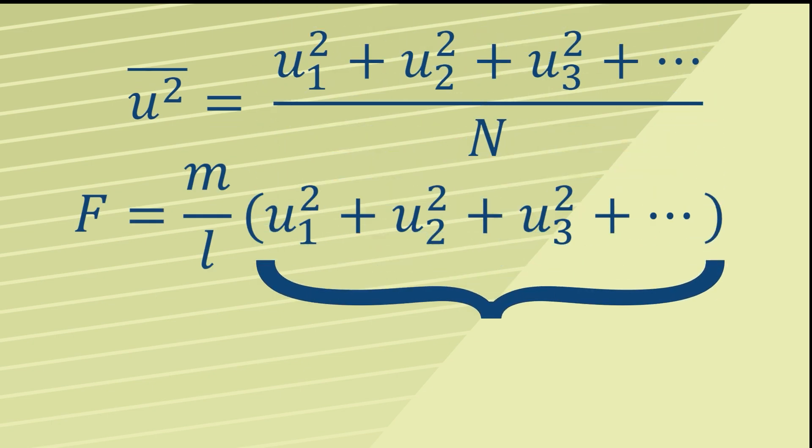Now we can see that if we take the mean square speed and multiply it by N, then that is going to be equal to the squares of all the individual speeds added up, which was the difficult bit inside the bracket.